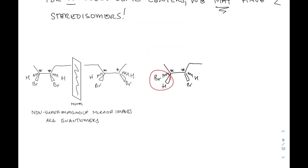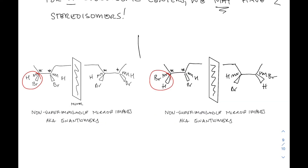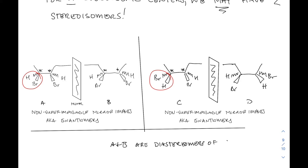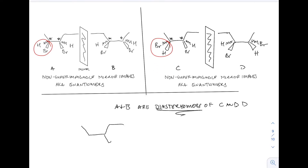That's not the diastereomer though. What I've done here is taken the circled carbon with its substituents and swapped the bromine for the hydrogen — put the bromine in the back. Now if we draw a mirror image of this one, we have another set of non-superimposable mirror images, but these are different compounds because the bromine was swapped. I've labeled A, B, C, and D — where A and B are diastereomers of C and D.